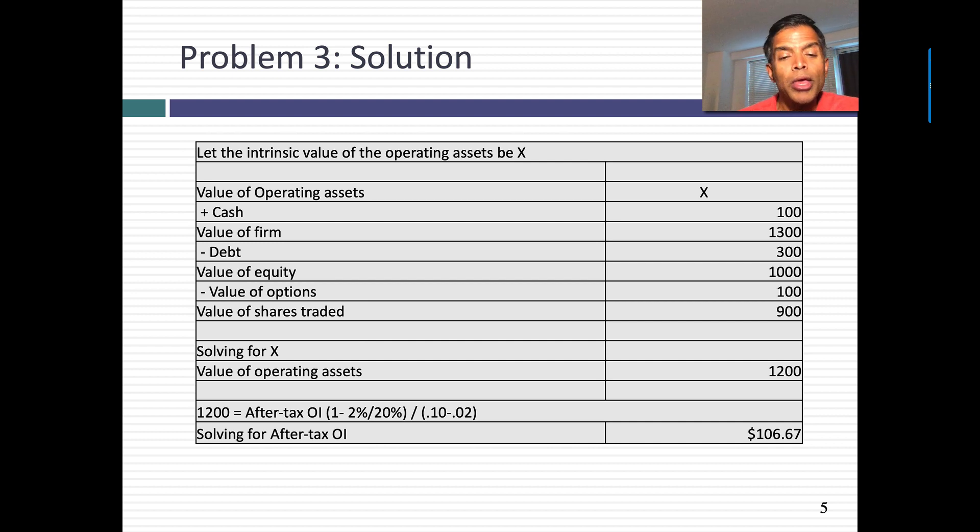You're saying, how does that help me? Remember, it's a stable growth firm. I know the value of the operating assets is $1,200. To get to that value, I would take the free cash flow to the firm next year. And to get to that, I would need the after tax operating income next year, which I don't know. I'll leave that as the unknown. But I'd have to net out reinvestment. That's where the growth rate and the return on capital come in. So this is a problem that combines your terminal value problem with an option problem. Very devious. But remember that if you have a 2% growth rate and a 20% return on capital, you have to reinvest 10% back. Which means your free cash flow to the firm is going to be 90% of your after tax operating income. You're given the cost of capital and the growth rate and I solve for after tax operating income.